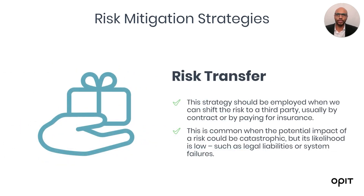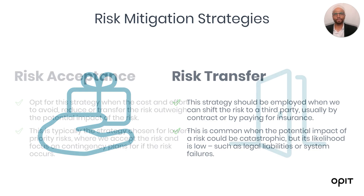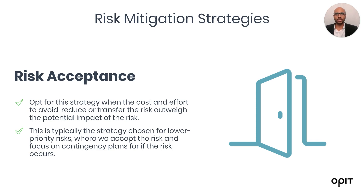Then we have risk transfer — this strategy should be employed when we can shift the risk to a third party, usually by contract or by paying for insurance. This is common when the potential impact of the risk could be catastrophic but its likelihood is low, such as legal liabilities or system failures. Then there is risk acceptance — opt for this strategy when the cost and effort to avoid, reduce, or transfer the risk outweigh the potential impact. This is typically chosen for lower-priority risks, where we accept the risk and focus on a contingency plan for if it occurs.